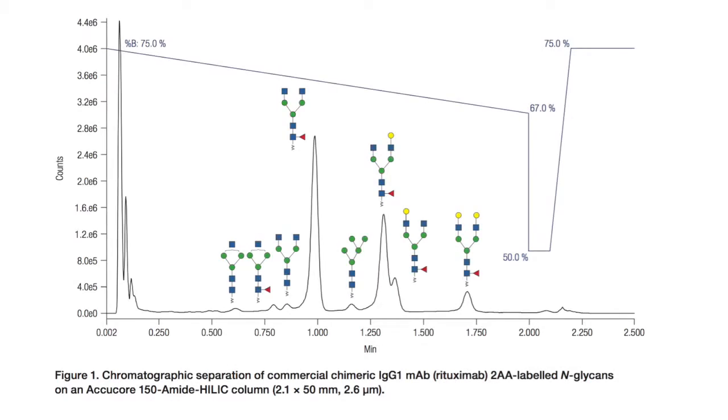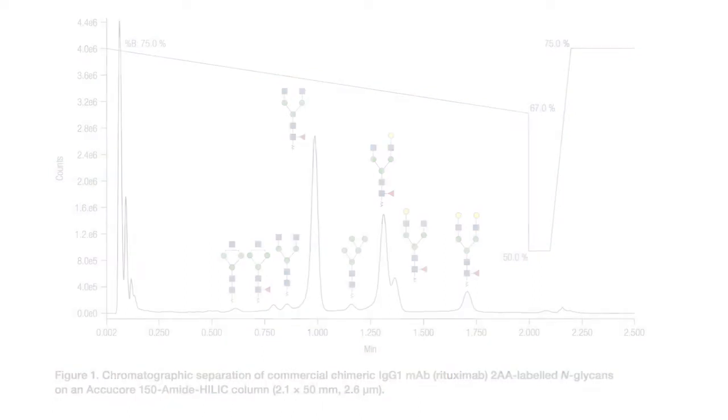The biotherapeutic sample we used was Rituximab, or Mabthera, a genetically engineered chimeric mouse-human monoclonal antibody. 2AA-labeled glycans were separated using a linear gradient of 75 to 67 percent acetonitrile in two minutes at 2.2 milliliters per minute.